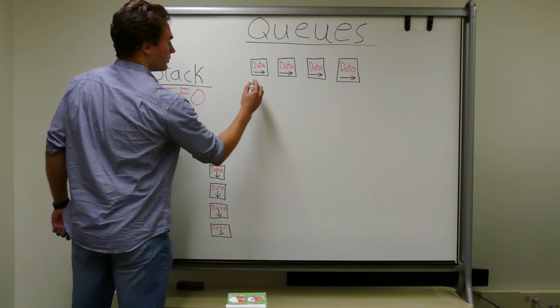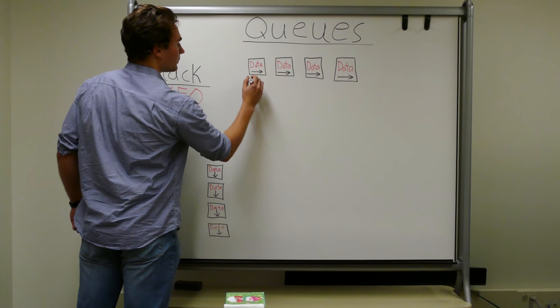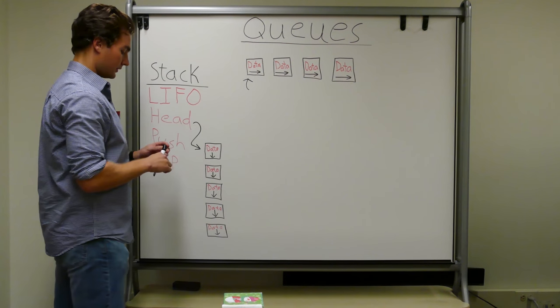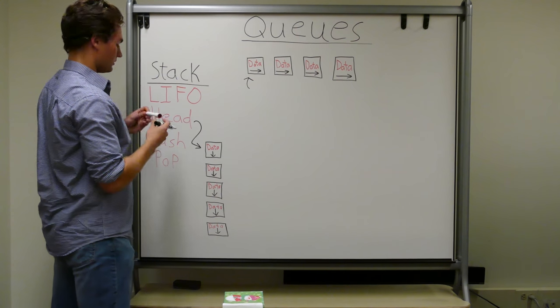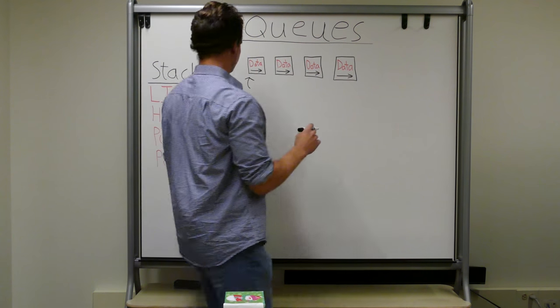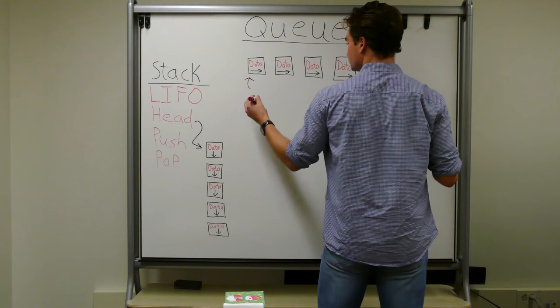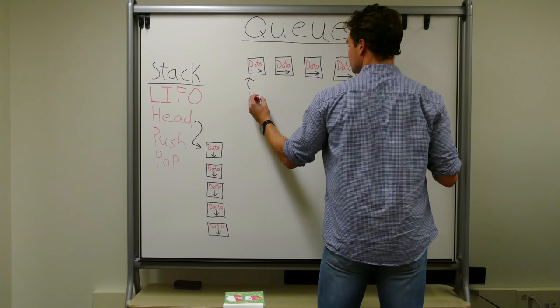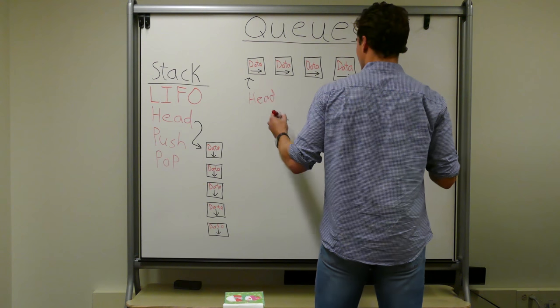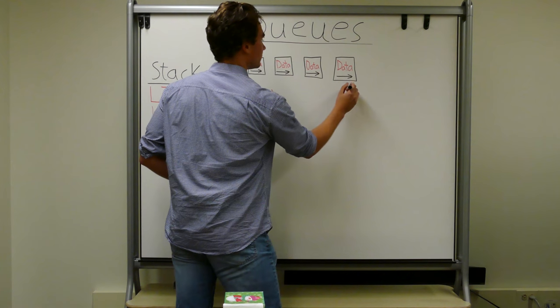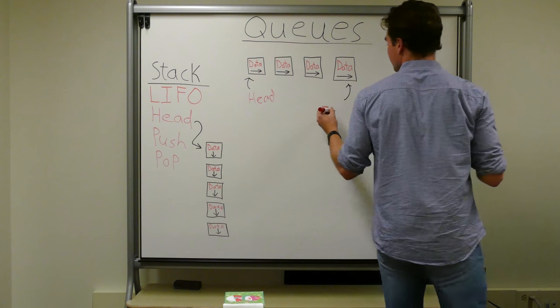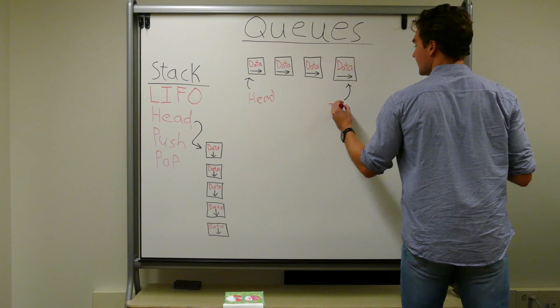So this node right here would be called the head. It can be thought of the front of the queue. And here, this node can be thought of as the tail, or the end of the queue.